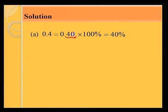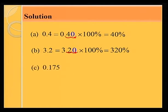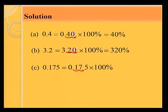For part B, 3.2: multiply by 100% — move the decimal point two places to the right — add a zero — giving 320%. For the last part, 0.175: multiply by 100% — move the decimal point two places to the right — giving 17.5%.